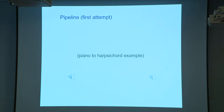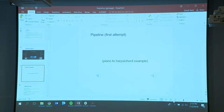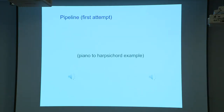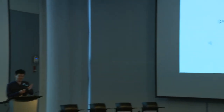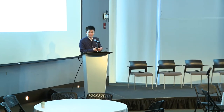That's the original piano, and the generated harpsichord. You can tell that the pitch is not preserved at all. It has the right timbre — that's the power of GANs — because the discriminator only tells whether this is a real harpsichord or a fake harpsichord; it doesn't concern itself with pitch, loudness, or anything else. So that's the problem.